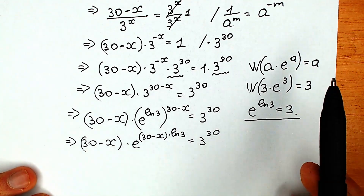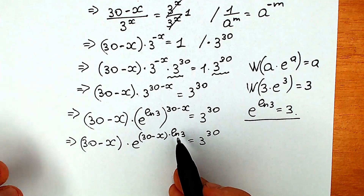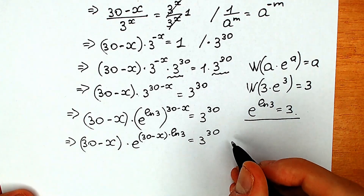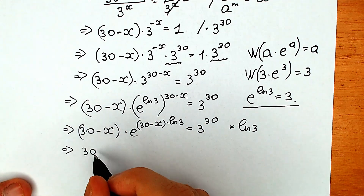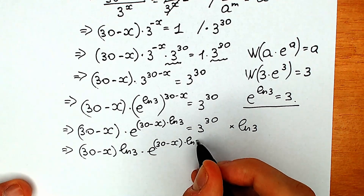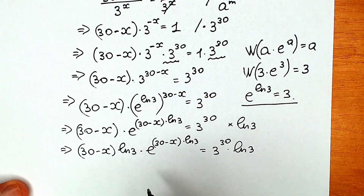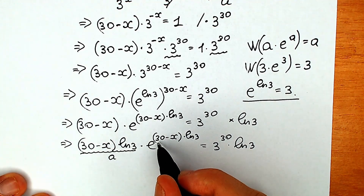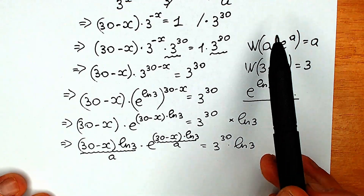Our last step is to multiply both sides by natural log 3. On the left side we get (30 minus x times natural log 3) times e to the power (30 minus x times natural log 3), equal to 3 to the power 30 times natural log 3. If we call 30 minus x times natural log 3 simply 'a', then the left side is a times e to the power a — exactly the form we need for the Lambert W function.